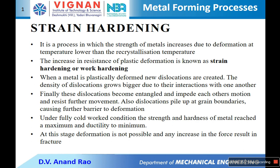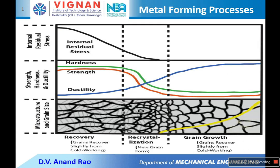To avoid fracture, we have to do heat treatment. This heat treatment is done to overcome the adverse effects of cold working and involves three stages: first is recovery, second is recrystallization, and third is grain growth.